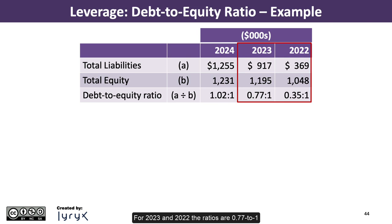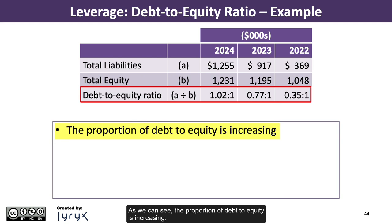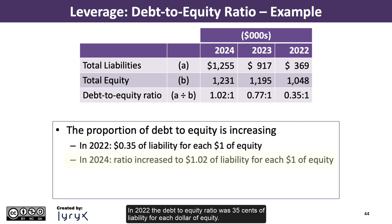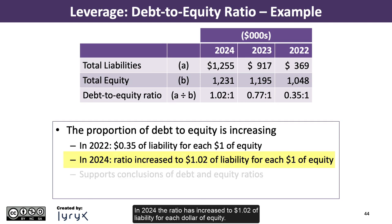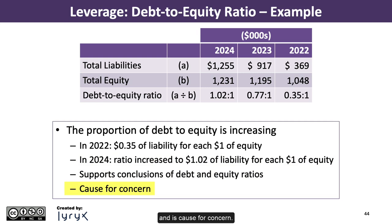For 2023 and 2022, the ratios are 0.77 to 1 and 0.35 to 1, respectively, calculated the same way. The proportion of debt-to-equity is increasing — in 2022 there was $0.35 of liability for each dollar of equity, and by 2024 this has increased to $1.02 of liability for each dollar of equity. This supports the conclusions of the debt and equity ratios separately and is cause for concern.